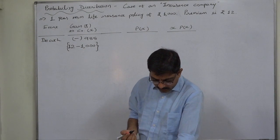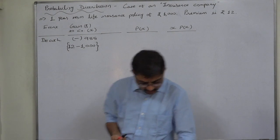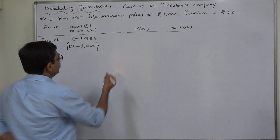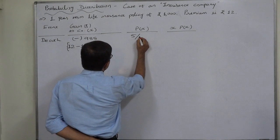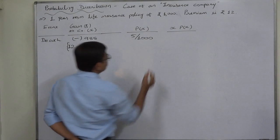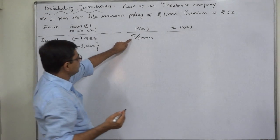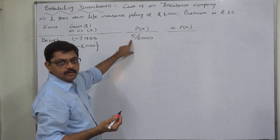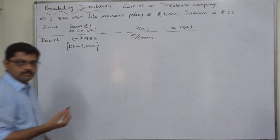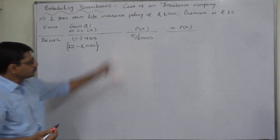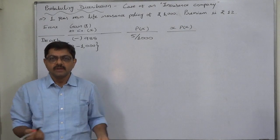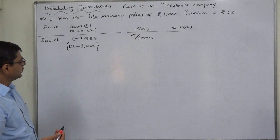Assume that number of deaths per 1000 is 5 for the persons in this age. 5 per 1000, that is the probability. Number of deaths, number of cases in favor of death 5 against total number of cases of 1000. Actually, it can be 5C1 upon 1000C1.